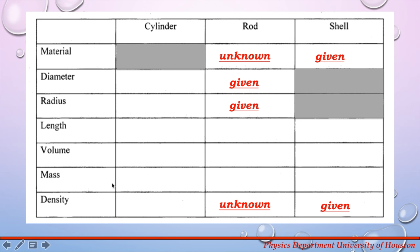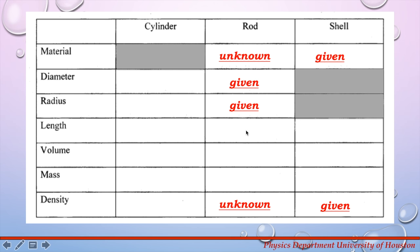First, measure the mass of the cylinder using the balance provided in your lab. Then use a vernier caliper to measure the diameter of the cylinder, and also measure the length of the cylinder. Dividing the diameter by two gives you the radius. Note that the length of the cylinder, the length of the rod, and the length of the shell are all the same. With the radius and length for the whole cylinder, you can now calculate its volume.